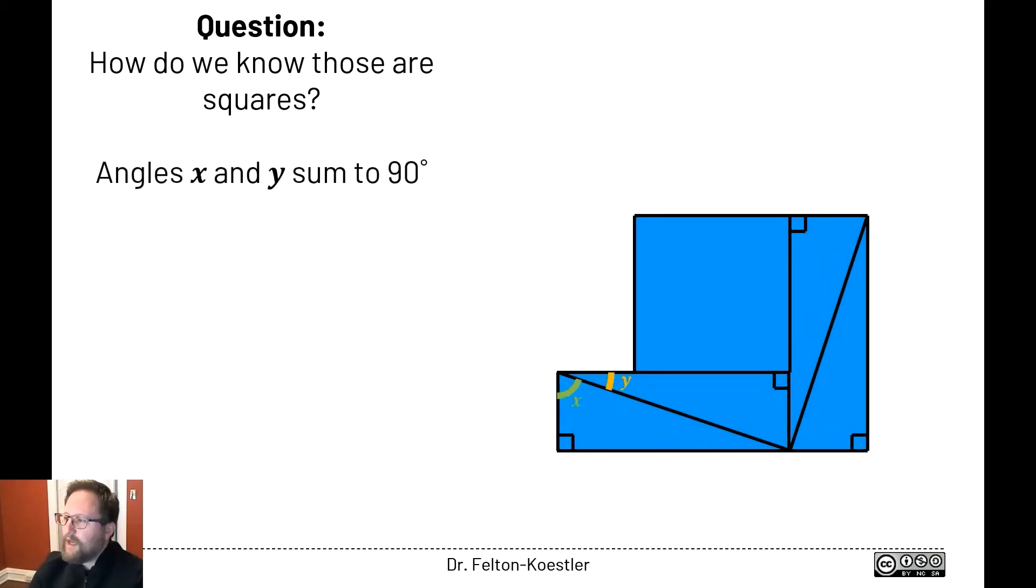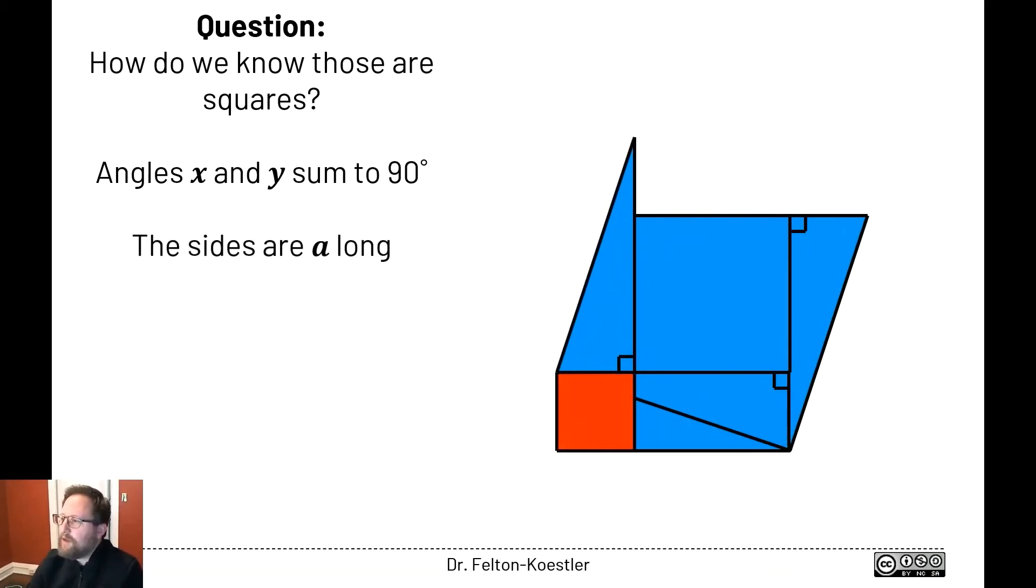Again, we have these x and y angles coming together and we know that they have to add up to 90, so that gives us a right angle in the corner there. If we move this piece here, the short legs of our triangles were a long, so that gives us our sides are a and we end up with a square that's a shape that is a square and it's a squared. Now there were a few more assumptions or details we have to work through to establish that all four corners are 90 degrees and that this is a square, but those are the big pieces.